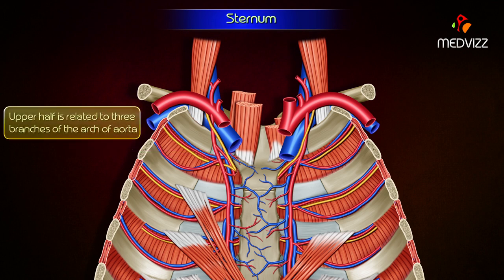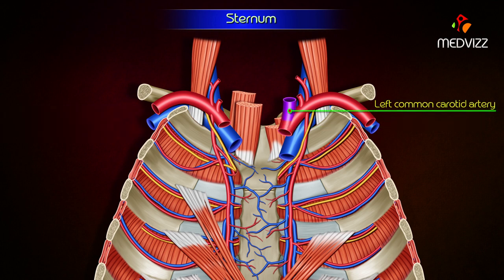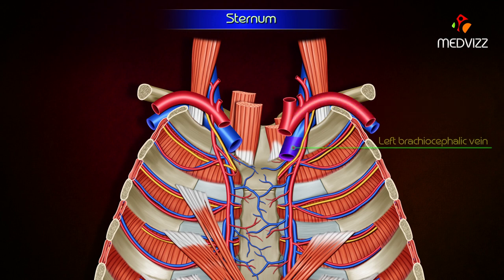The upper half is related to three branches of the arch of the aorta: the brachiocephalic artery, left common carotid artery, left subclavian artery, and left brachiocephalic vein.